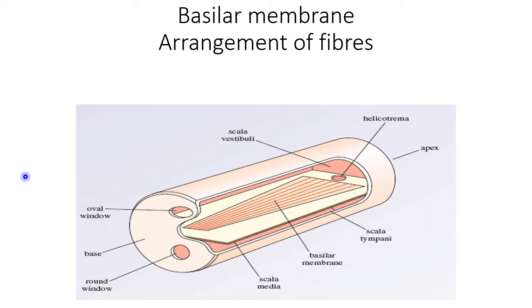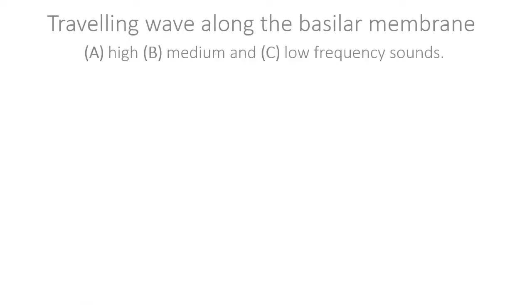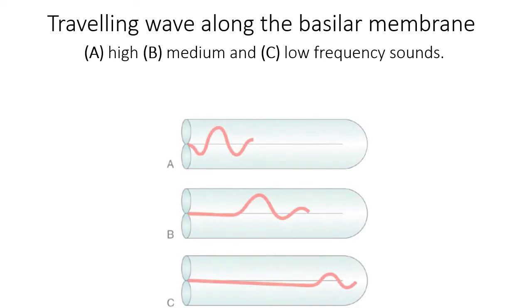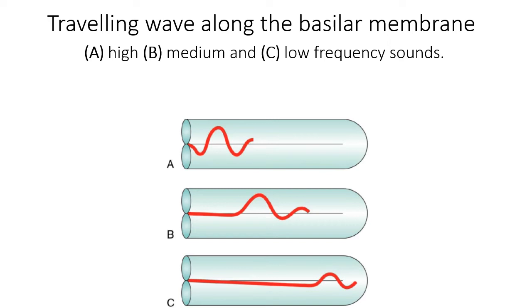Different parts of the basilar membrane are stimulated by different frequency sounds. Now we will discuss the place principle, but before that we need to understand how sound travels through the basilar membrane. This schematic diagram of the cochlea shows: A represents high frequency sound, B is medium frequency, and C is low frequency sound. The end part of the basilar membrane, which has long, thin fibers, is stimulated by high frequency sound, which can only travel a short distance along the membrane.